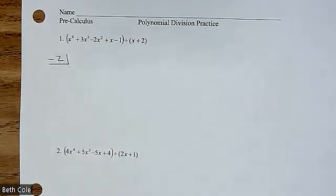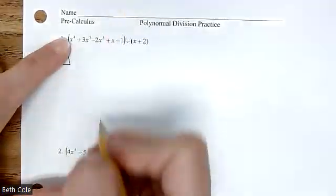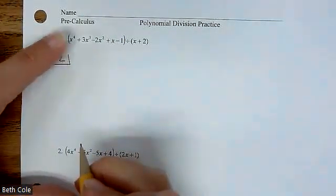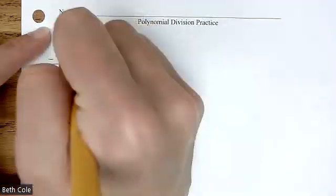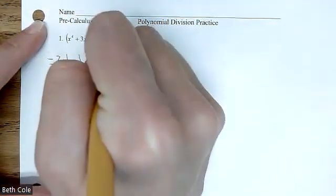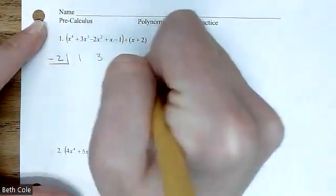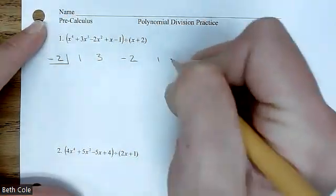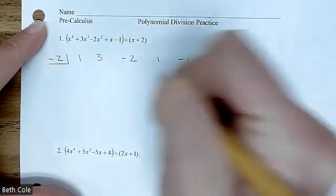Just take all the coefficients from the problem. What's the first one? I know it's a little weird because it's not written — yeah, that's 1. So: 1, 3, negative 2, 1, negative 1.